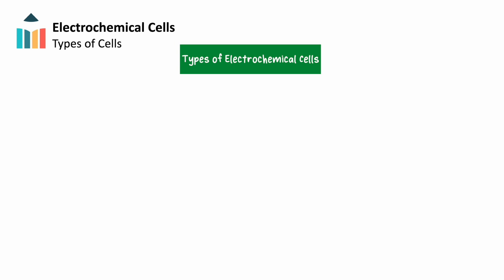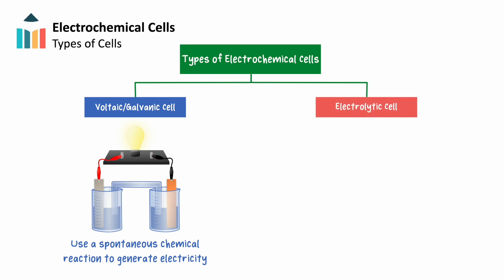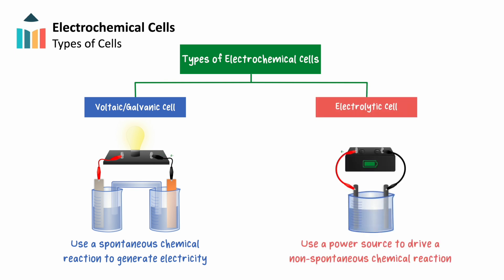An electrochemical cell in which a spontaneous redox reaction generates an electrical current is called a voltaic or galvanic cell. In contrast, a cell in which current from an external power source — such as a DC battery or AC power source — drives a non-spontaneous redox reaction is called an electrolytic cell.